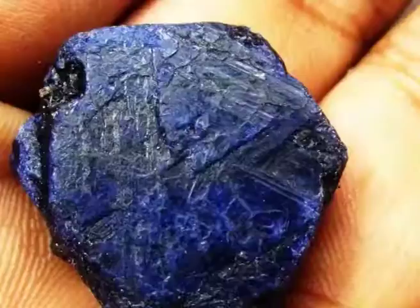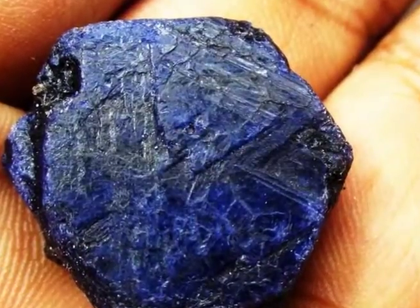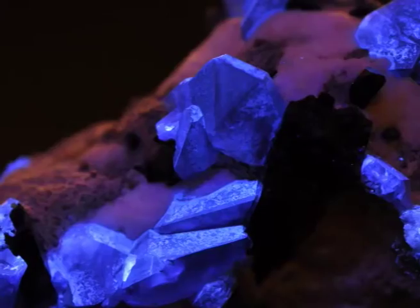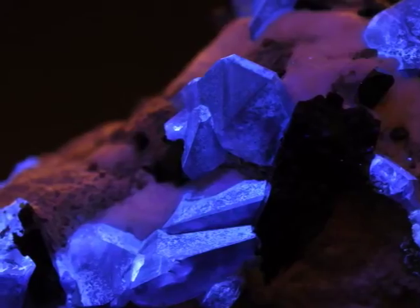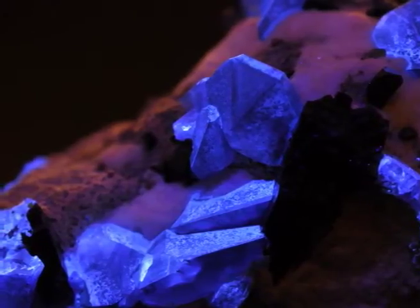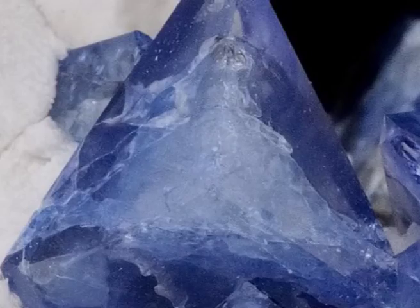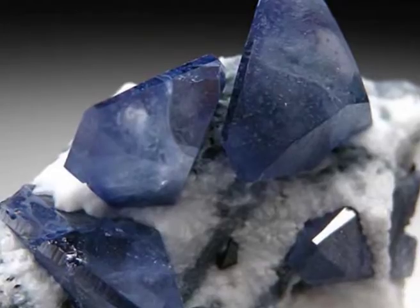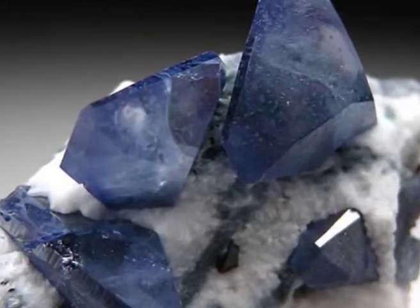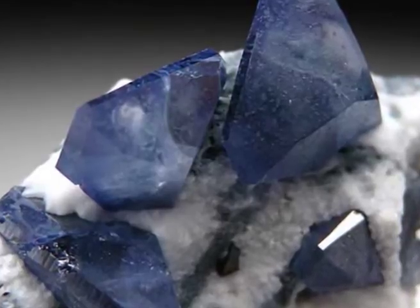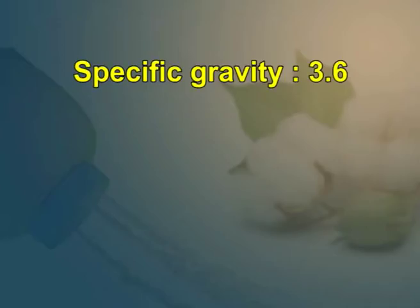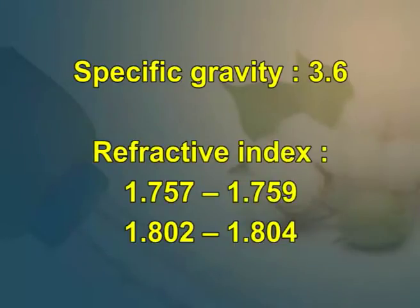Description: bentonite occurs in slightly greenish, grey or blue colour. When observed under UV light, it shows a light blue colour. It is insoluble in water, hydrochloric acid and sulphuric acid. It occurs as tubular dipyramidal crystals and the hardness ranges from 6 to 6.5. Bentonite has a specific gravity of 3.6 and a refractive index of 1.757 to 1.759 and 1.802 to 1.804.